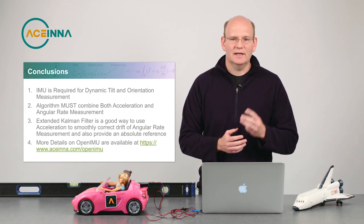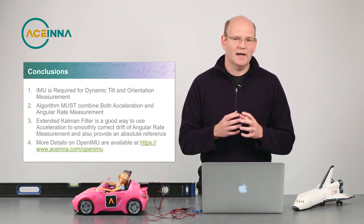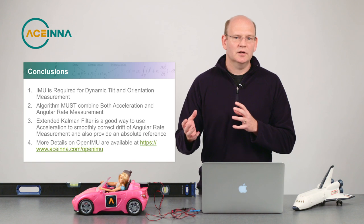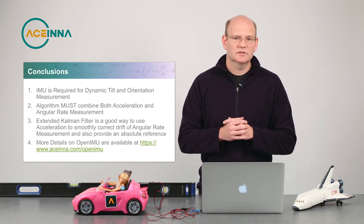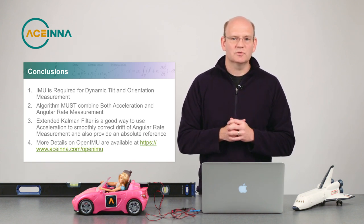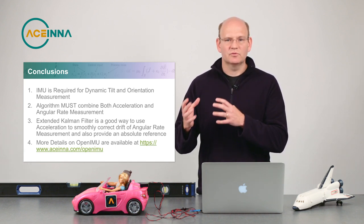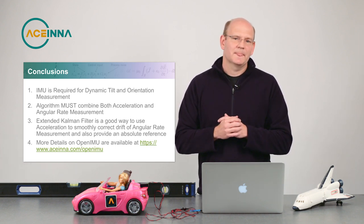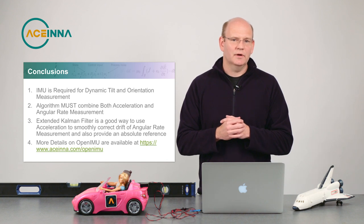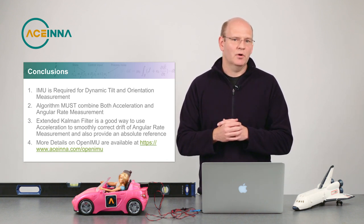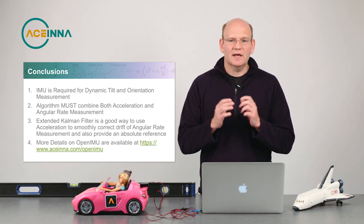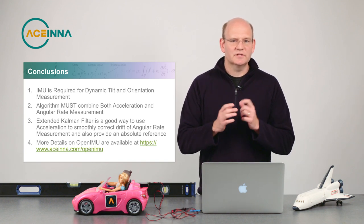The third thing is an extended Kalman filter, because this is the best way to smoothly use both the acceleration sensor and the angular rate measurement at the same time and provide absolute reference and drift-free. And the fourth point is that all this code is available in OpenIMU, and more information is available on Ascena's website. So thank you for listening, and I hope you have enjoyed this video.